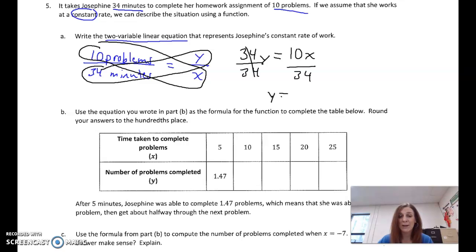34 divided by 34 is just one y. You could leave this as 10/34ths x, or if you reduce it, y equals 5/17ths x. Or if you did a decimal, you're going to get some kind of random decimal there. But you could approximate it as 0.294. I think you're going to get a random decimal.